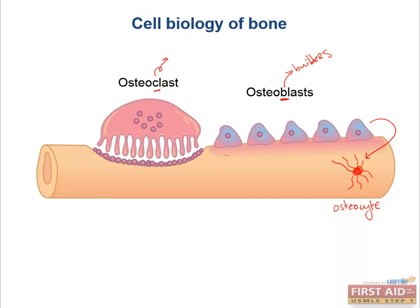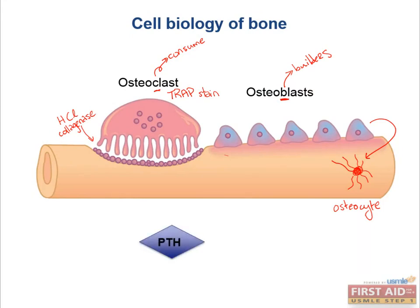Osteoclasts have a C, like consume, and secrete HCl and collagenase to break down and absorb bone. They differentiate from circulating monocytes. What happens if osteoclasts are too active? Then too much bone gets resorbed, like in hyperparathyroidism or osteoporosis. What is the classically used marker of the osteoclast on pathology? That would be TRAP staining. The main thing to keep in mind about PTH is that low intermittent levels lead to buildup of bone. What drug is currently on the market to this effect? That would be teriparatide. Chronically high levels lead to severe bone resorption, as in hyperparathyroidism. Which bone cell do you think PTH revs up? Osteoclasts, causing massive bone resorption and high calcium levels, as you learned in endocrine.